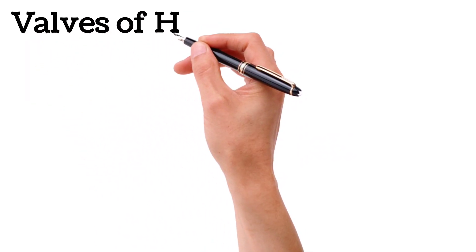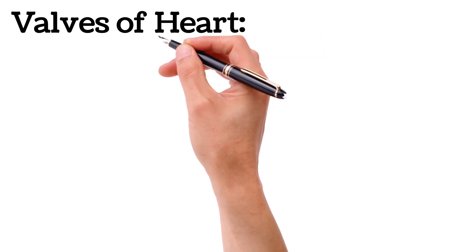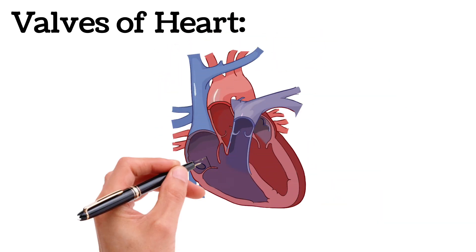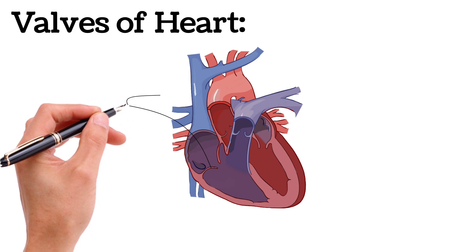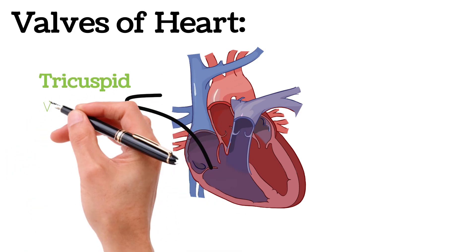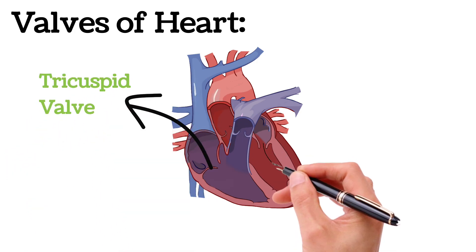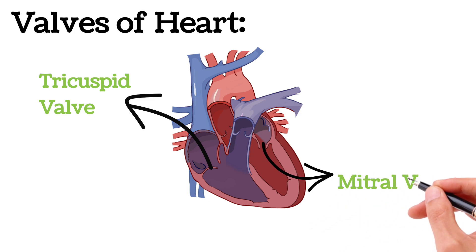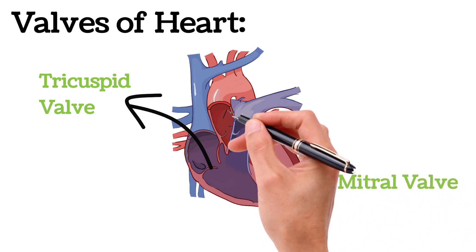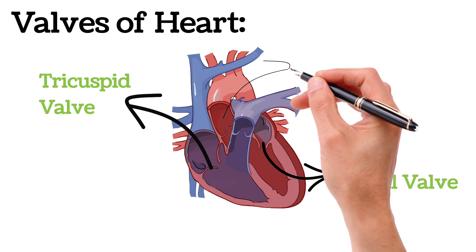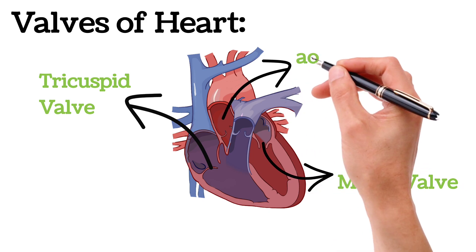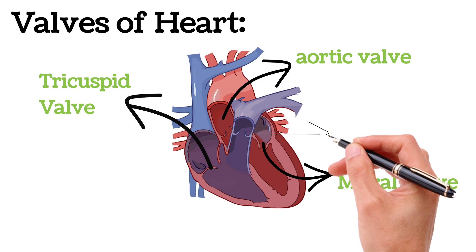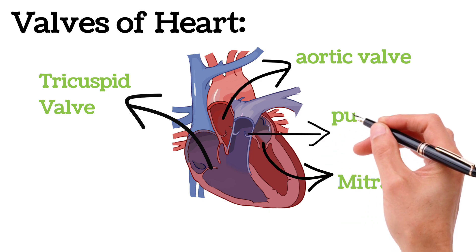Valves of Heart. The heart has four valves: the tricuspid valve, the mitral valve, the aortic valve, and the pulmonary valve.